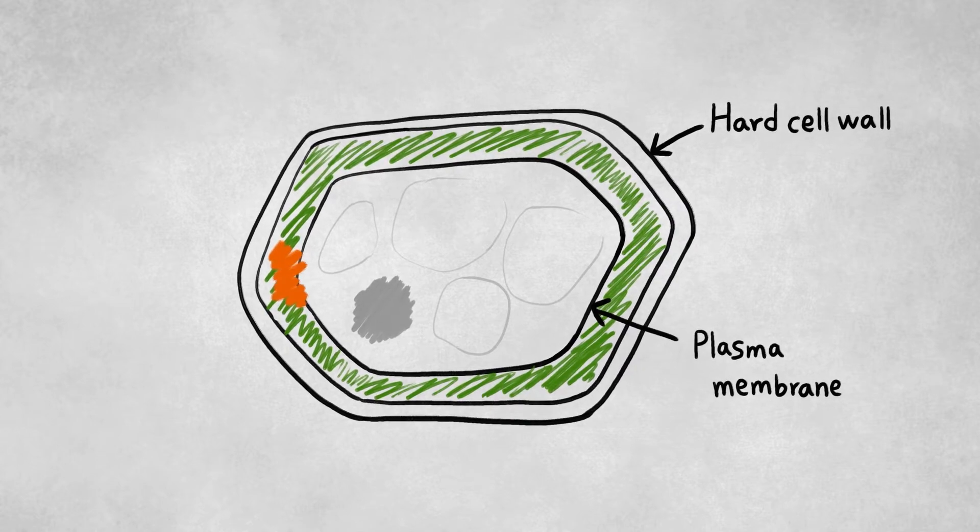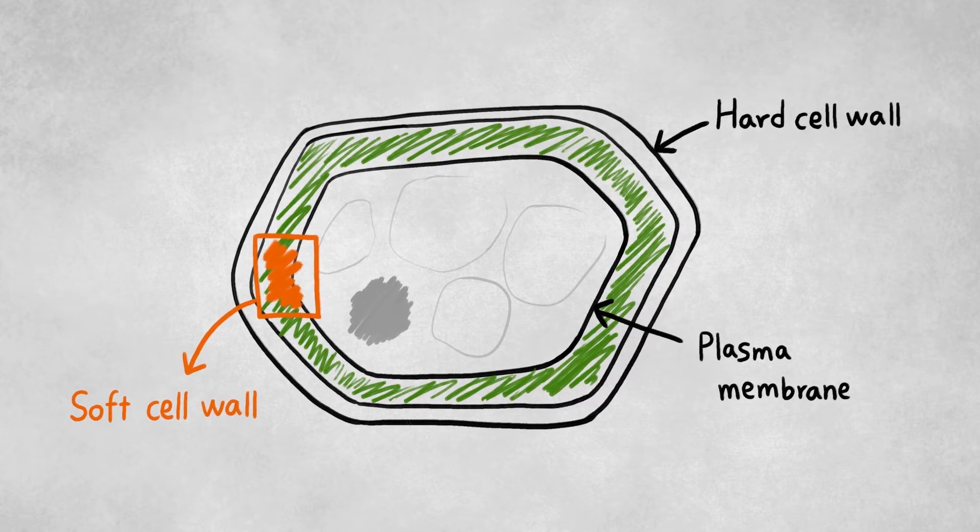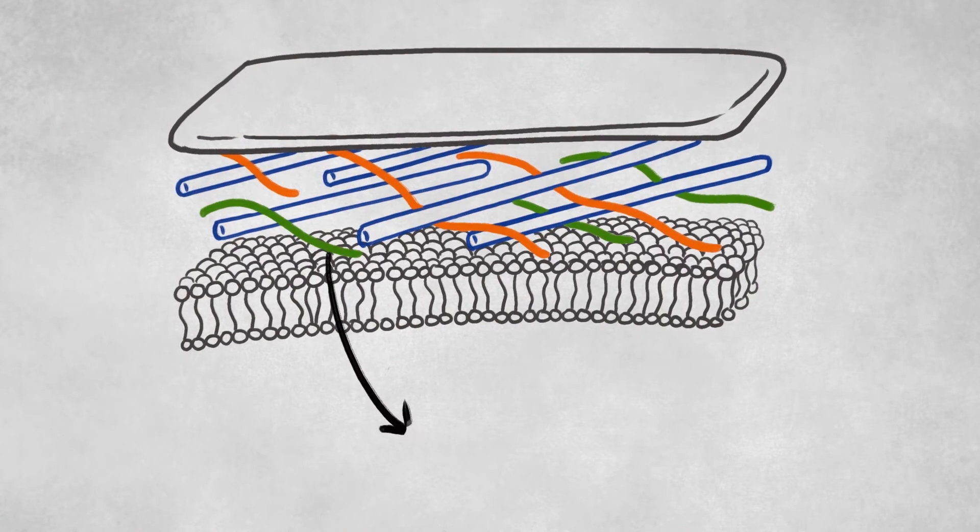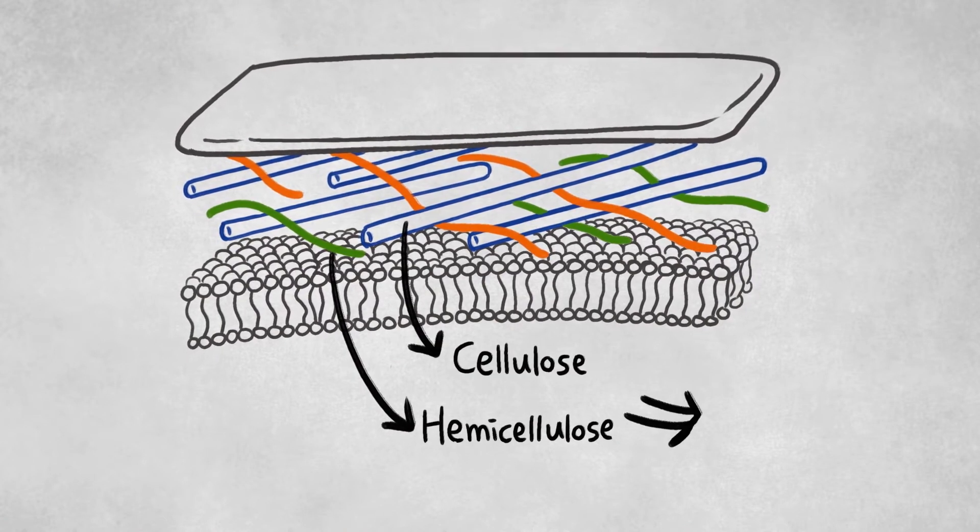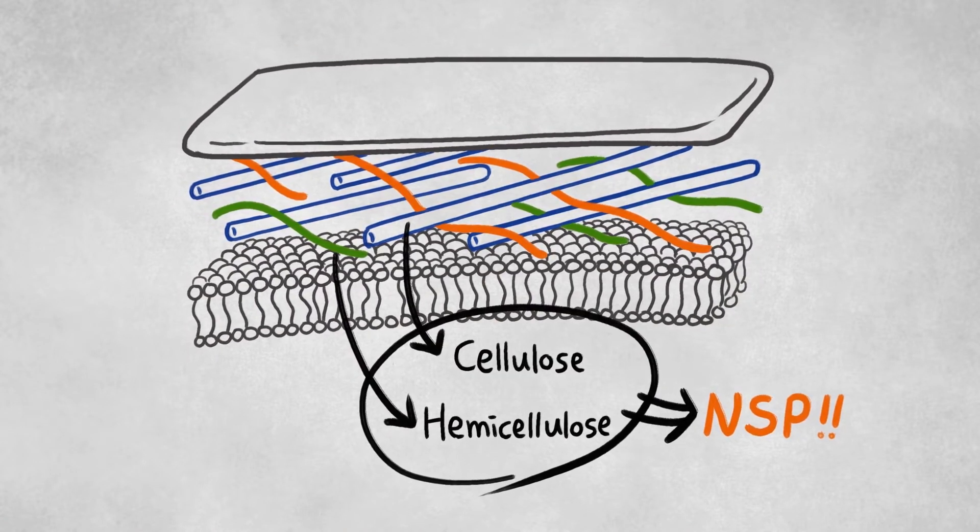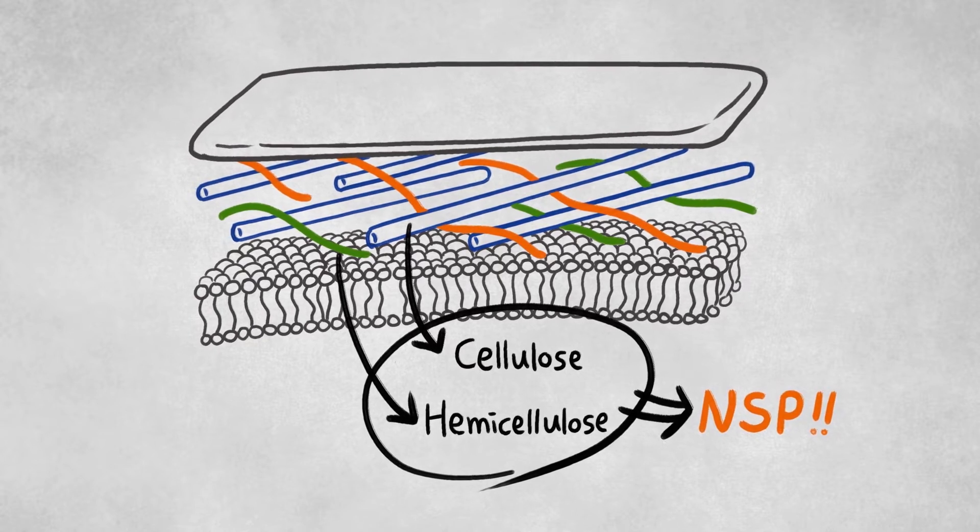In consequence, nutrient utilization and growth performance are compromised. That is why NSP-degrading enzymes like EndoPower should be supplied to improve nutritional value of feed.